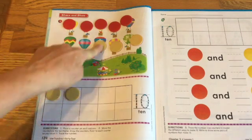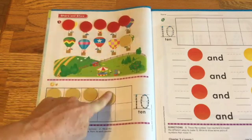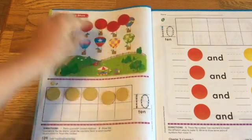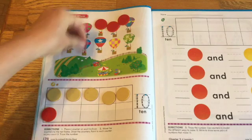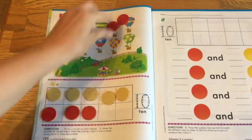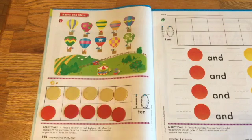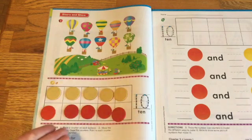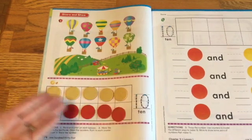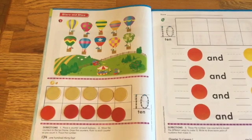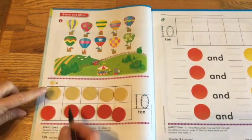So now it says to move our counters to our ten frame. Okay. So first we fill up the top. And next we fill the bottom. Okay. So now we move them all into our ten frame. It's all filled up. So how many is that one? It's all filled up. Yes, that's ten. If it's all filled up, it's ten.